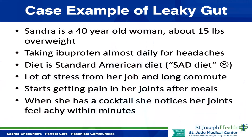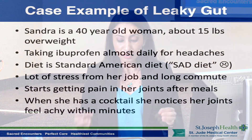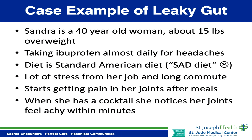Let me give you a case example. Sandra is a 40-year-old woman, about 15 pounds overweight. She's taking ibuprofen almost daily for her headaches, and her diet is the standard American diet — fast foods, processed foods, and sugary drinks. She has a lot of stress from her job and long commute. She starts noticing pain in her joints after meals, and when she has a cocktail she gets achiness in her joints within minutes.